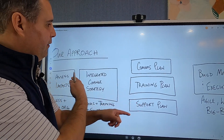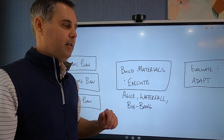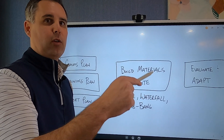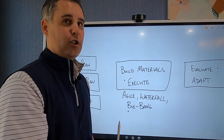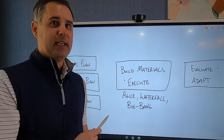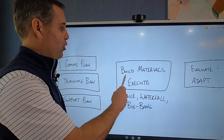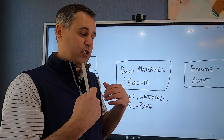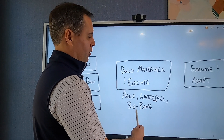Once you have your plans, you start to build materials and execute. Whether you're running an agile methodology with iterative technology releases, a waterfall approach with big chunks, or a big bang approach, all of that is tied back into your strategy. In agile releases, every month or two we run through the whole process and crank out materials constantly, and the organization gets used to receiving these updates in a consistent way.